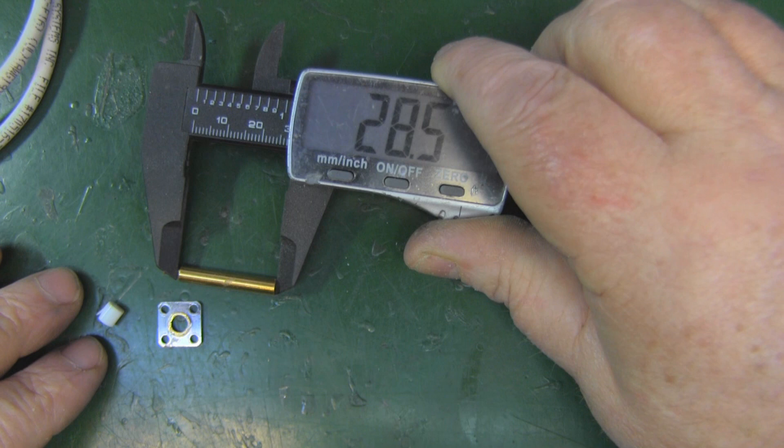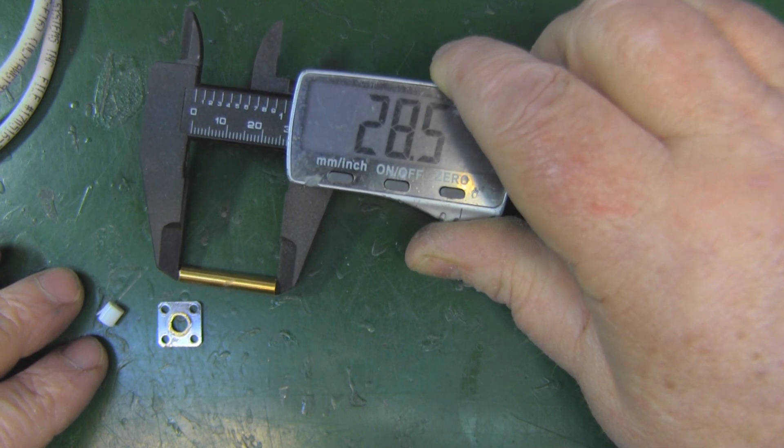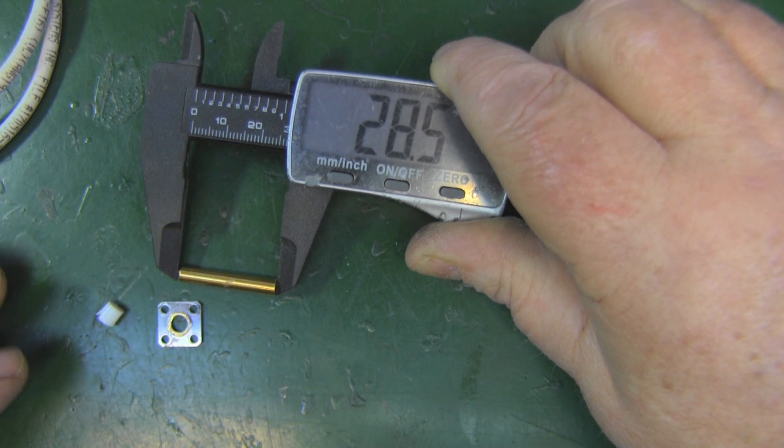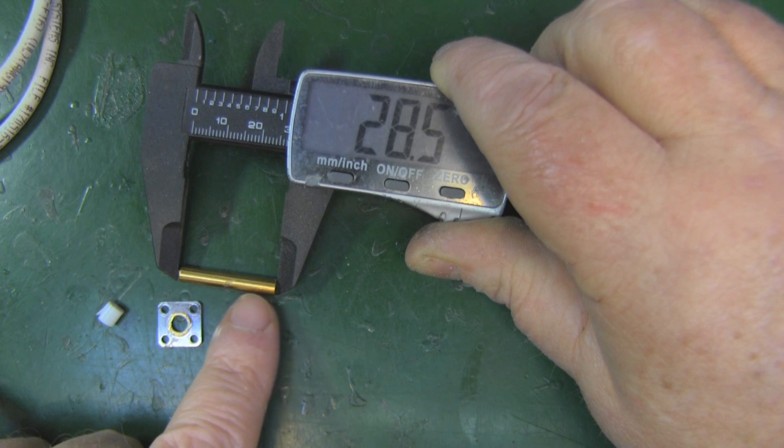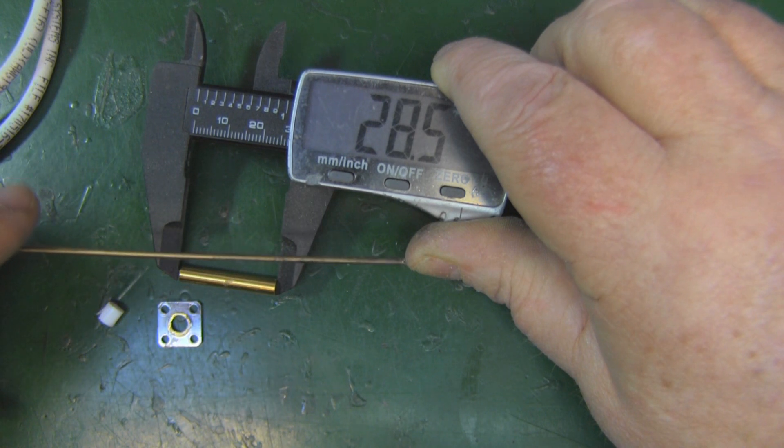Now that we can measure the main driven element correctly, you can see that it's 28.5 millimeters, shorter than the typical 31, 31.5, and that's because of the width, the thickness of the diameter of the main driven element.